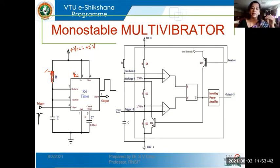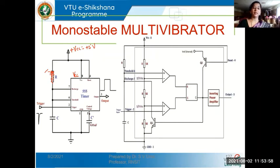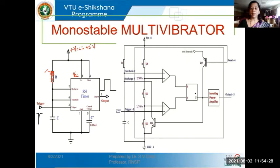Pin 1 is the ground pin, connected to ground as usual. Pin 5 is the control voltage pin — when I want the comparison voltage at the upper comparator to remain at two-thirds Vcc, I connect a capacitor from pin 5 to ground. That capacitor helps overcome noise variations and prevents false triggering. Output is seen at pin 3 as usual.